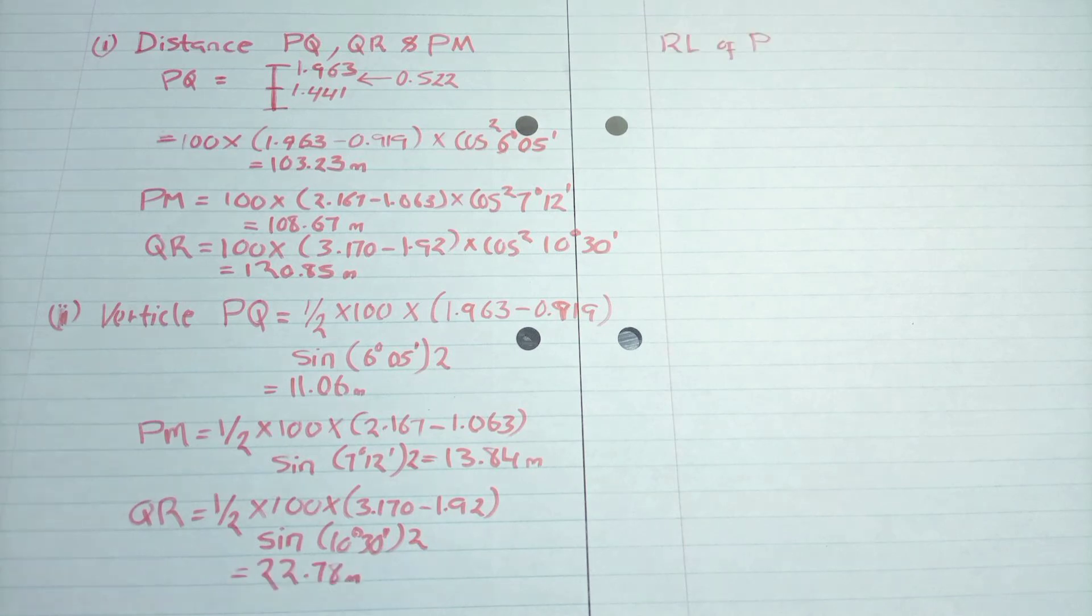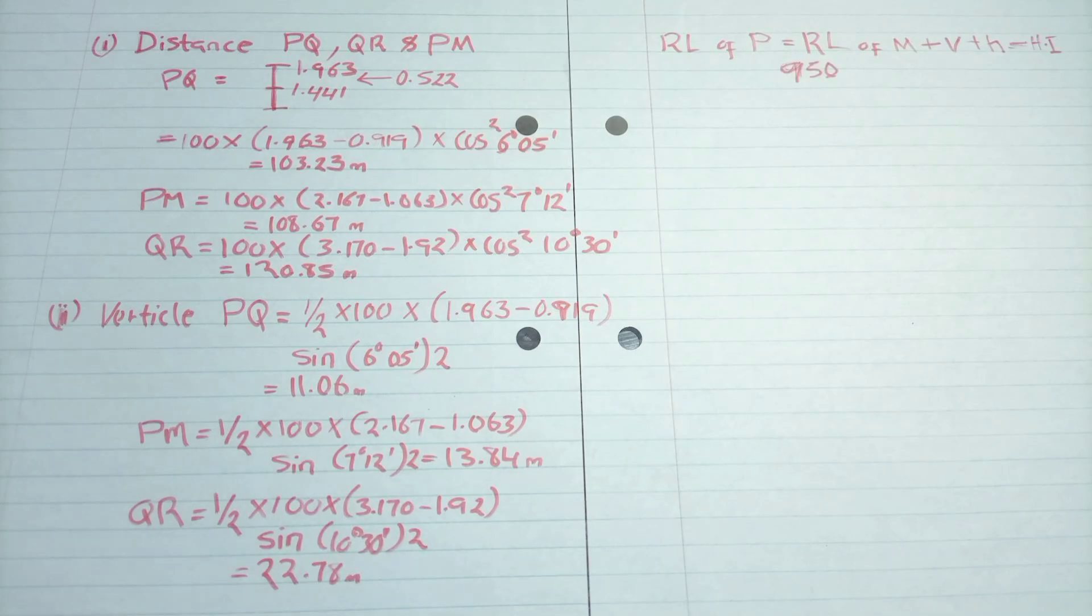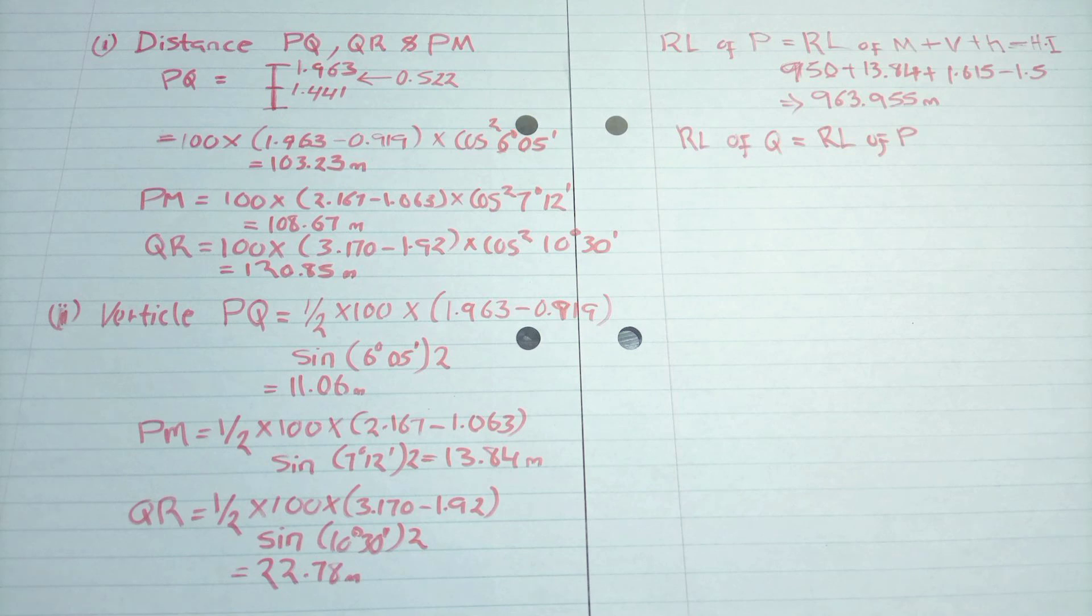And we will now go for the reduced levels of P, that will be the reduced level of M plus V plus H minus the height of instrument. As you can see in our previous diagram, so that will be 950 plus 13.84 plus 1.61 minus the height of instrument, and we'll repeat the same for Q.